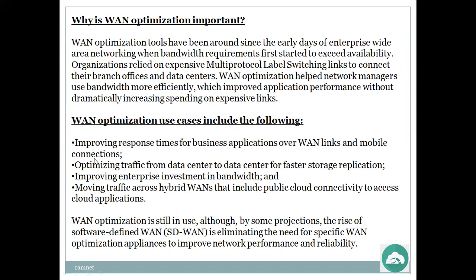WAN optimization use cases include: improving response times for business applications over WAN links and mobile connections — since 80 percent of internet connections now come from mobile; optimizing traffic from data center to data center for faster storage applications; improving enterprise investment in bandwidth; and moving traffic across hybrid WANs that include public cloud connectivity to access cloud applications.